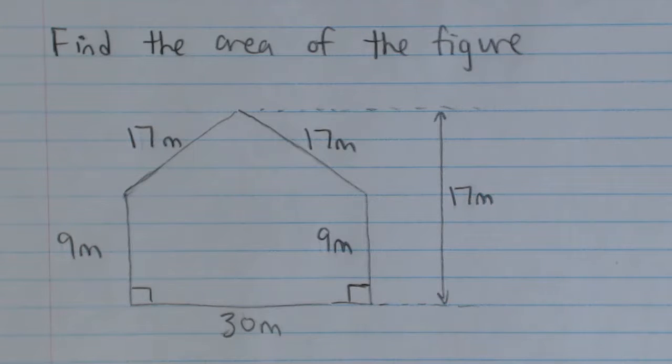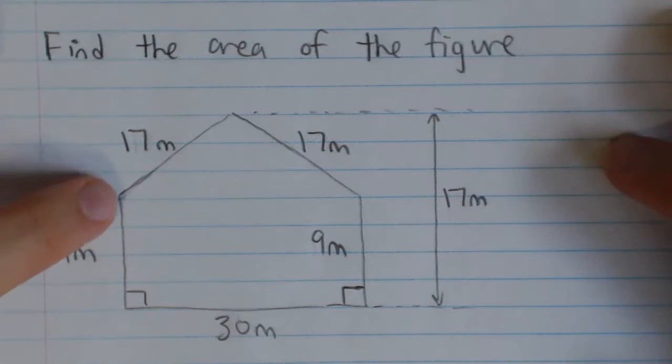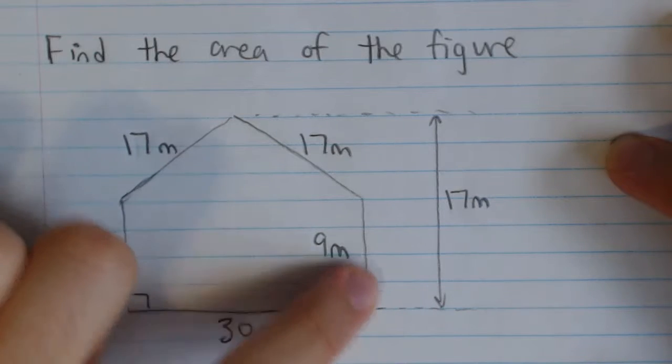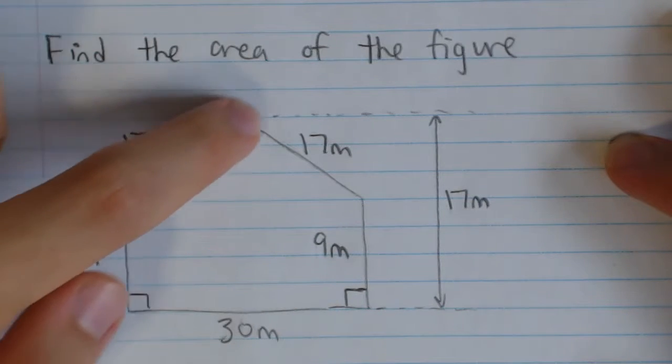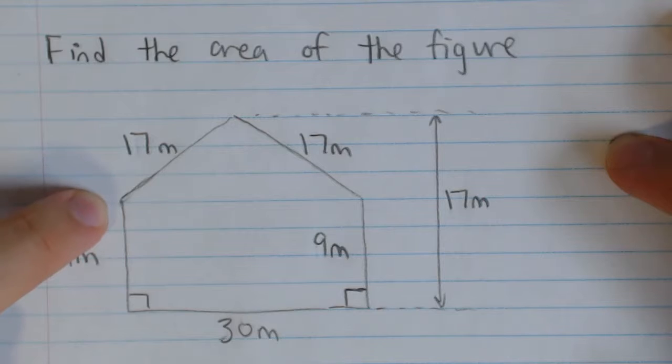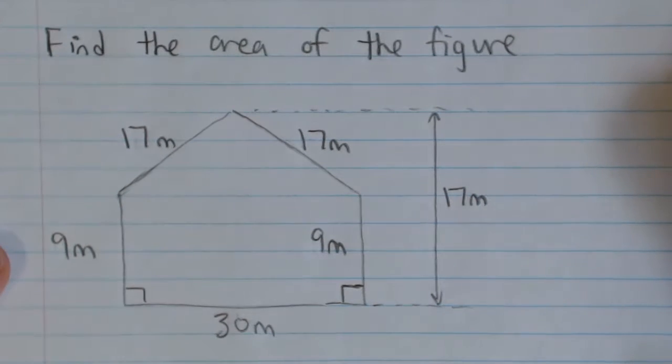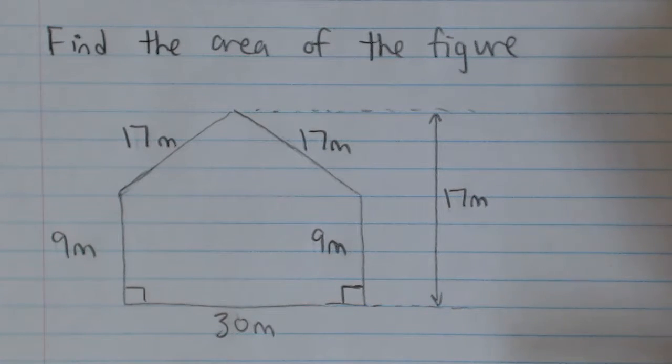I'm going to break it up into two shapes: a rectangle, this rectangle right here that goes just like that, around like that, and a triangle, this triangle right here. And so if we do that, the area of the rectangle, that's fairly straightforward.